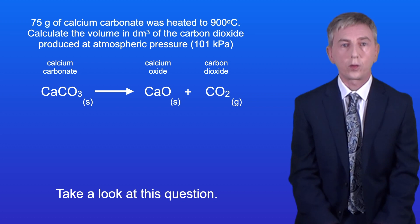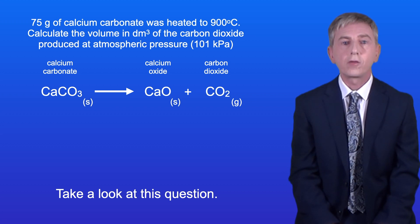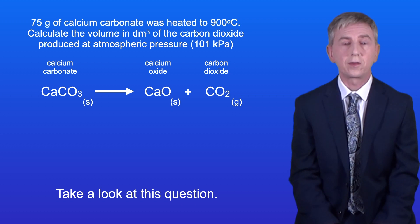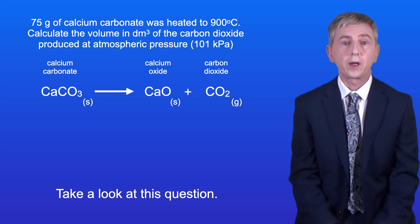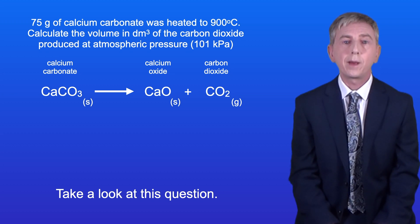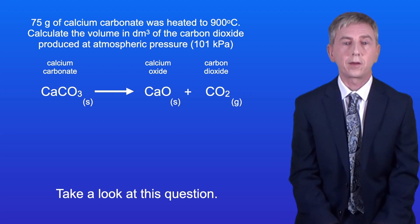Take a look at this question. 75 grams of calcium carbonate was heated to 900 degrees Celsius. Calculate the volume in decimetres cubed of the carbon dioxide produced at atmospheric pressure. Remember that atmospheric pressure is 101 kilopascals.